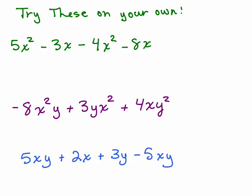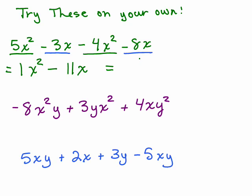Here are three problems for you to try on your own — go ahead and put it on pause, try it, and we'll come back. The first one: I'm looking for common variable parts. I have a 5x squared — is there another x squared? Yes. Make sure you pay attention to the sign — it's minus 4, so you combine 5 minus 4 to get 1x squared, and we don't write 1 for a final answer. So even though you might first write 1x squared, you take off the 1 to be more simplified, because 1 times anything is really whatever that other part is. I also have the like terms negative 3x and negative 8x, so combining those gives minus 11x. My final answer is x squared minus 11x — that's the most simplified way to write it.